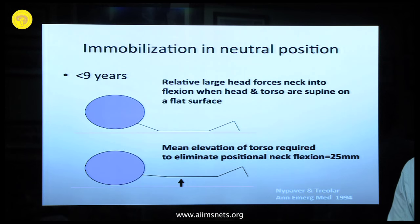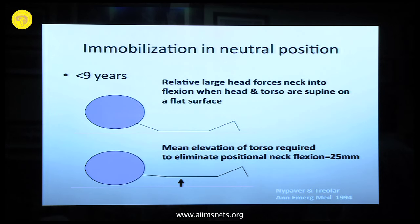A final important point: in a child lying supine post-operatively, you do not want the head in a position of flexion. There is a disproportion between the head and the torso — the head is larger than the torso when a child is less than 9 years of age. So even when putting a child supine, there is flexion of the head. You need to elevate the body slightly so the child is actually in extension. This applies to any craniovertebral junction or cervical spine case in a child.